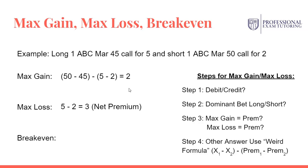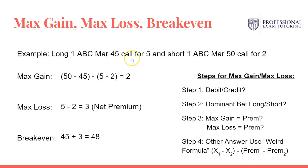For breakeven, we use the dominant bet's strike price as the anchor — 45 — and add the net premium of 3 (since it's a call option), giving a breakeven of 48. If it were a put option instead, you would subtract the net premium from the strike price: 45 minus 3 equals 42.